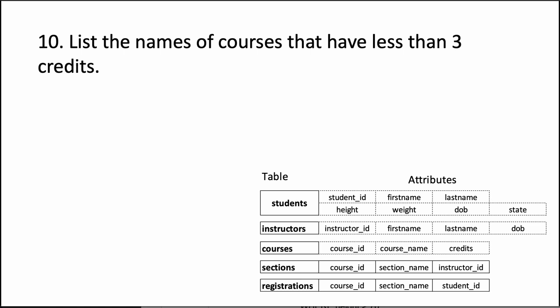This time we want something about courses, so obviously we are talking about the courses table. It says list the names of courses, so we want a particular column from the courses table.